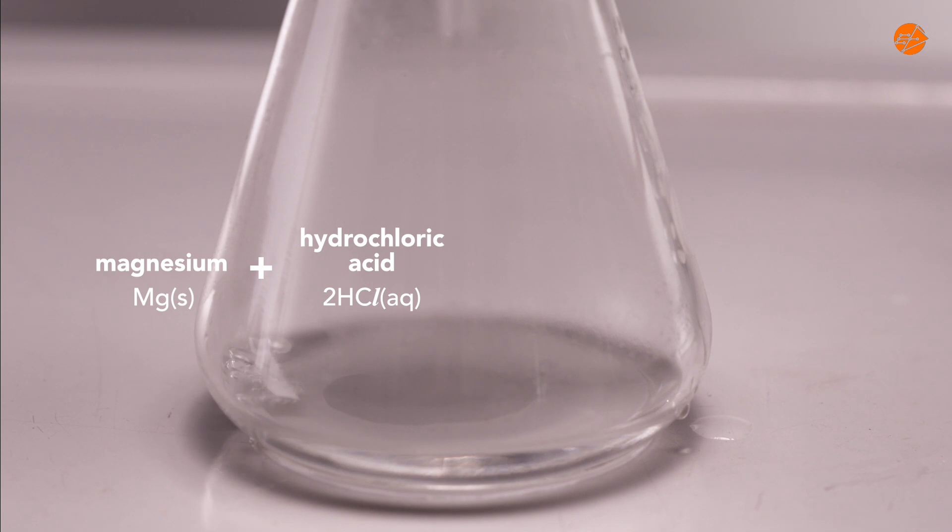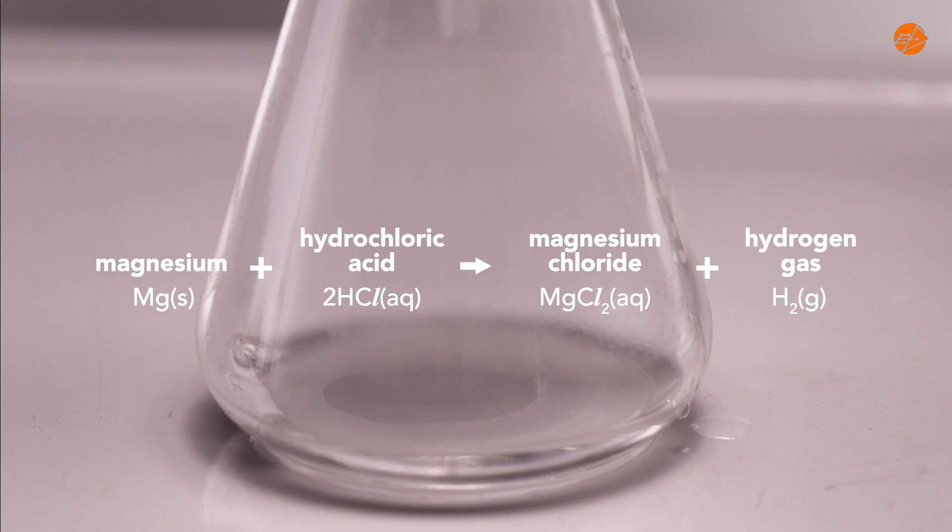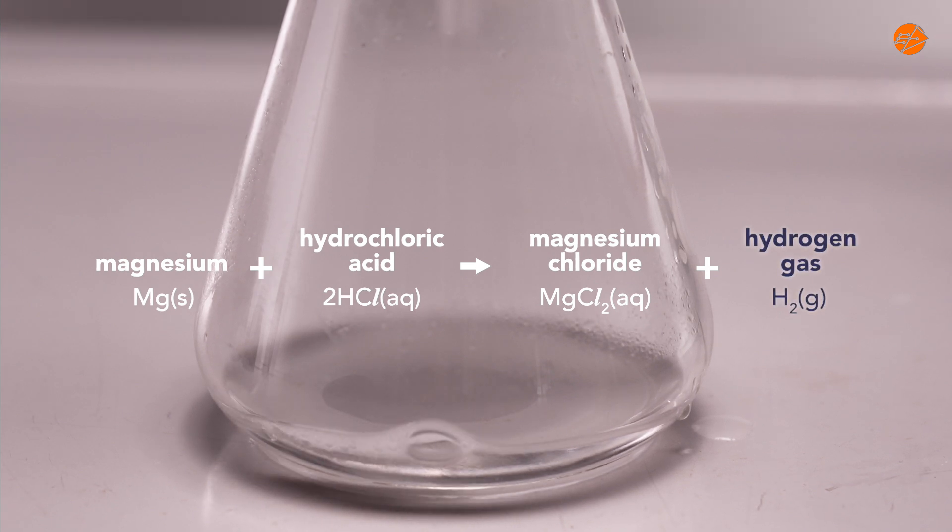In the reaction between magnesium and hydrochloric acid, magnesium chloride and hydrogen gas are produced. We can collect the hydrogen gas through displacement of water.